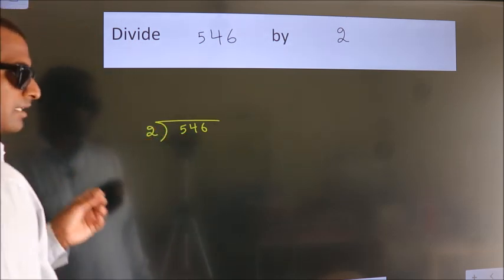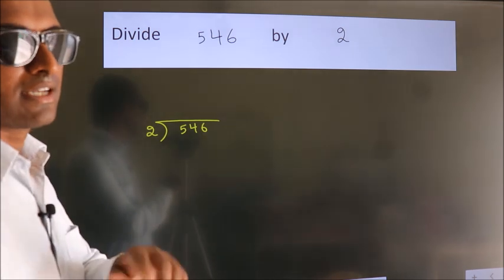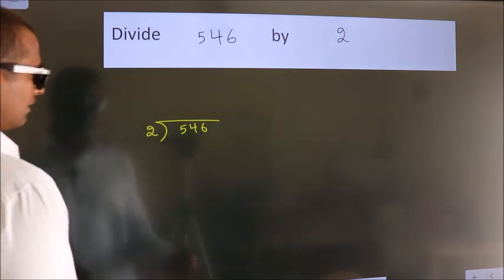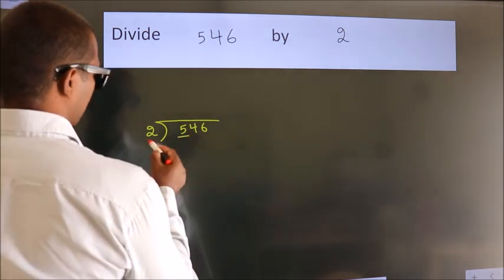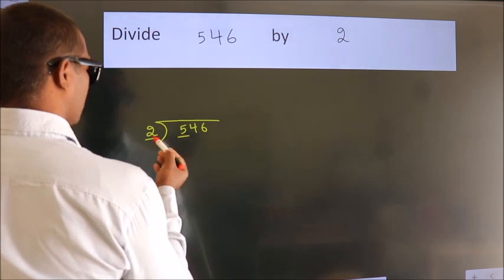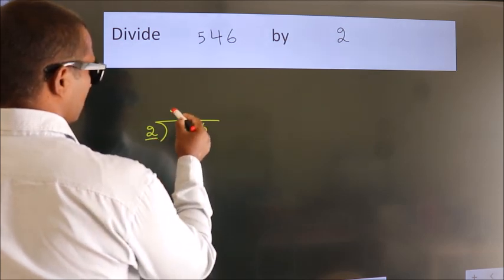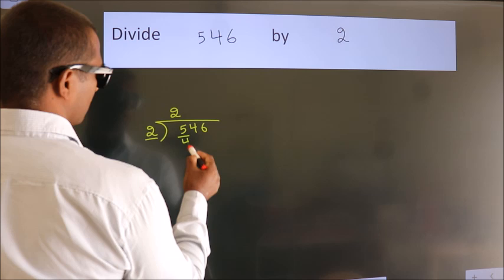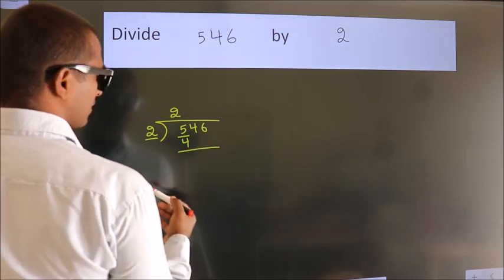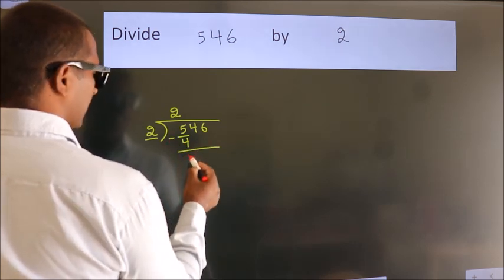This is your step 1. Next, here we have 5, here 2. A number close to 5 in 2 table is 2 2s, 4. Now, we should subtract. We get 1.